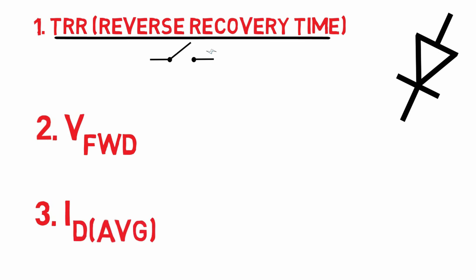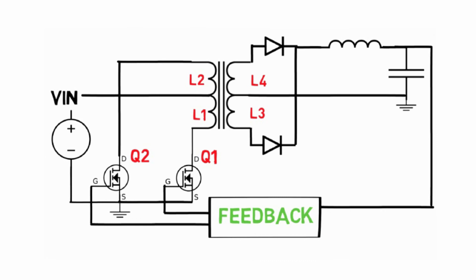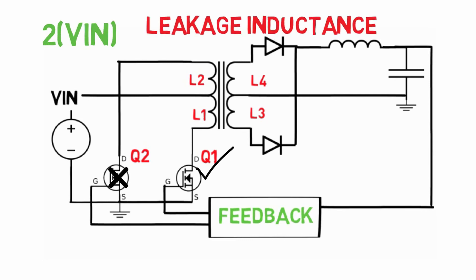For transistor selection, let's see the topology. When one transistor is on, the other one is off, and at the same time more than twice of input voltage will dissipate across it due to some leakage inductance present in the circuit. Hence the transistor must be chosen such that it will withstand 1.382 into DC input voltage.